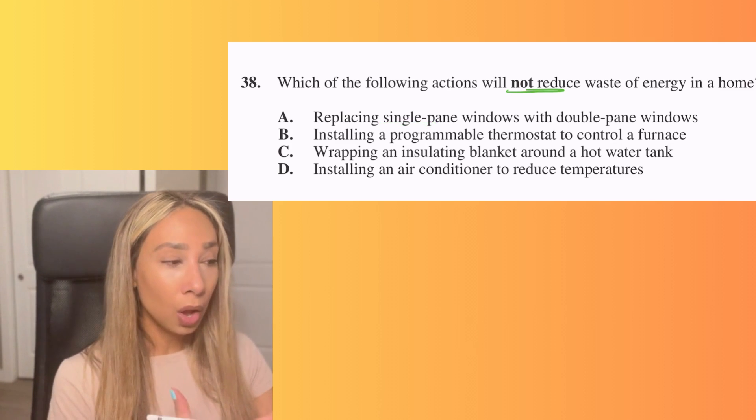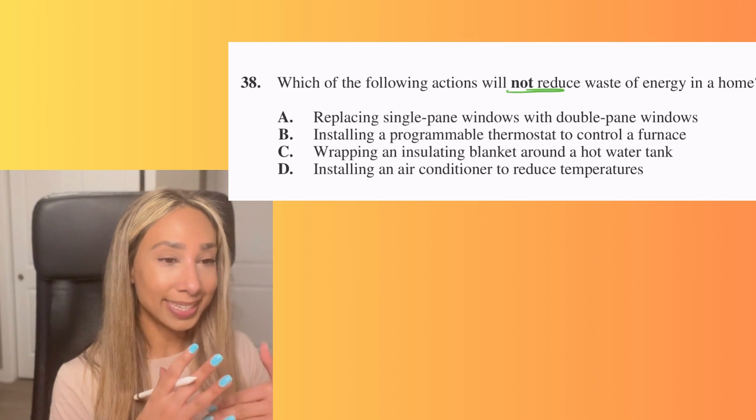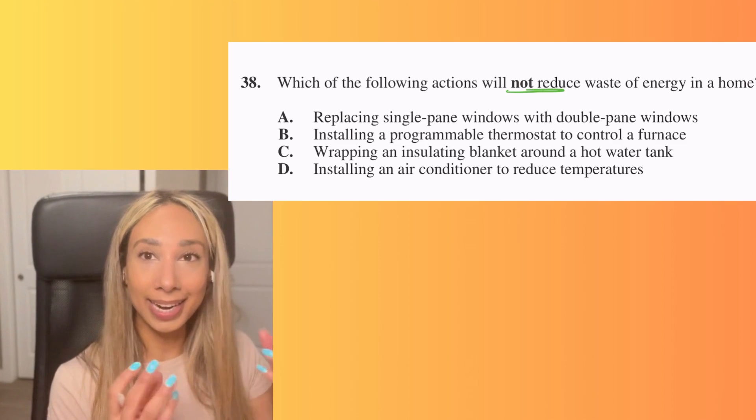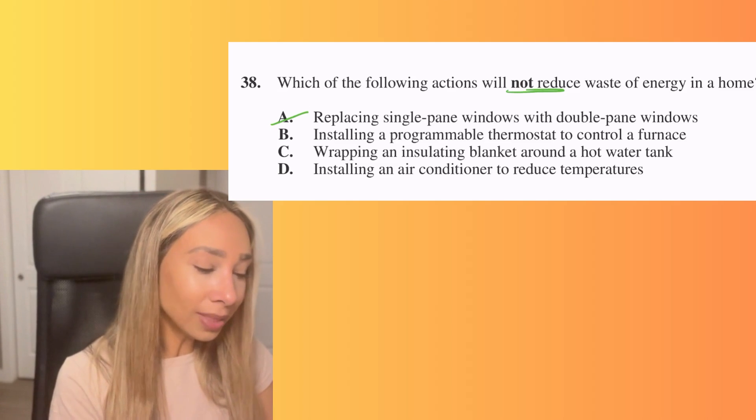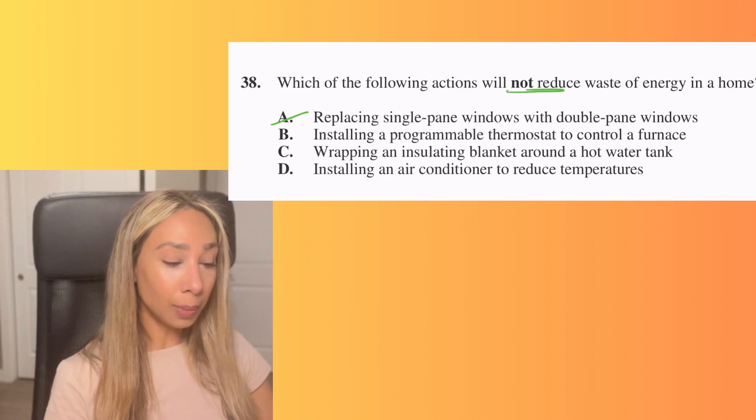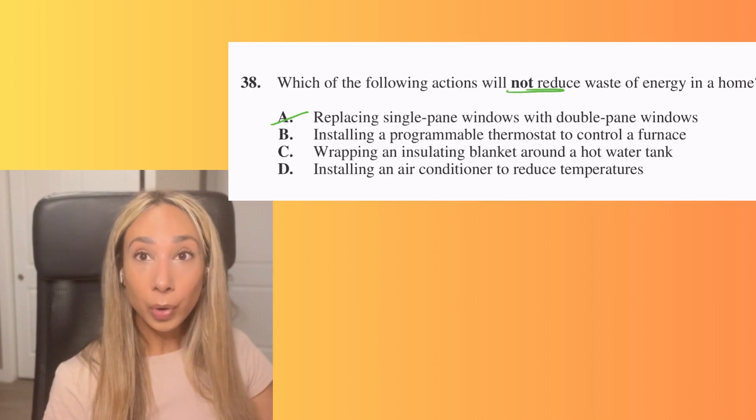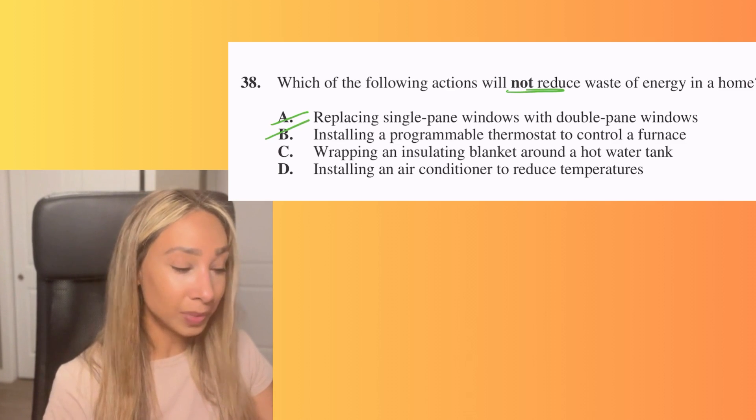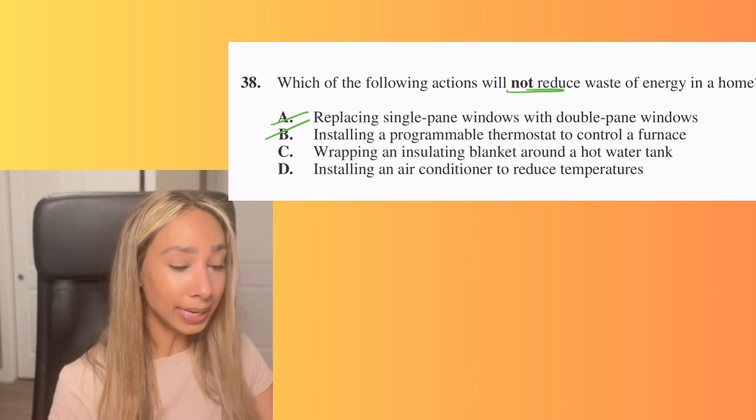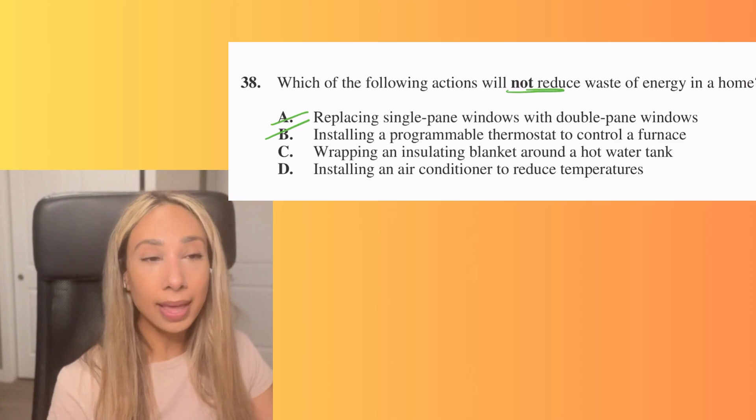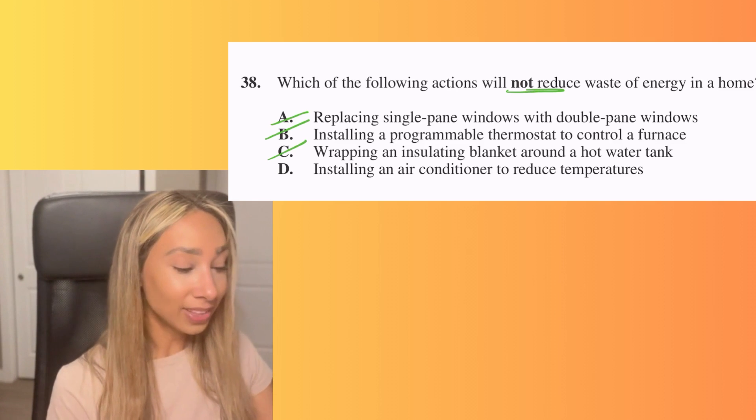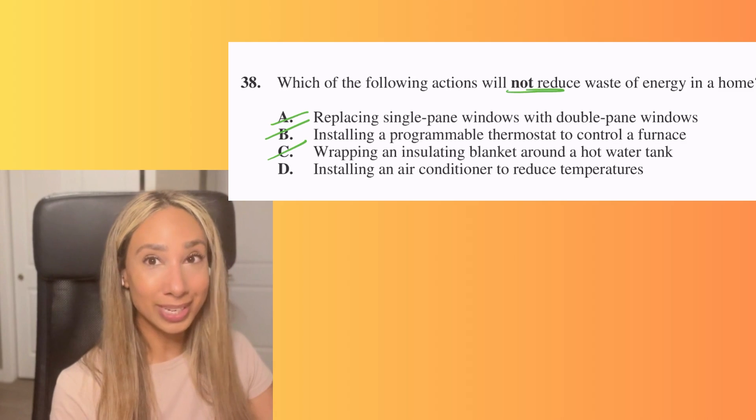Replacing a single pane window with a double pane window. So with a single pane window, what that means is you are not able to isolate the energy inside the home as well as a double pane window. So you've got basically like an extra blocker that's going to keep that energy inside. So that one's going to be pretty efficient. Installing a programmable thermostat to control a furnace. Of course, if it's programmable, that means when everyone is off to work and school, the furnace isn't going to be running as high and that is going to save some energy. Option C, wrapping an insulated blanket around a hot water tank. That is going to be helpful. It's going to make sure all the energy is contained in the water tank. So that one's going to work.